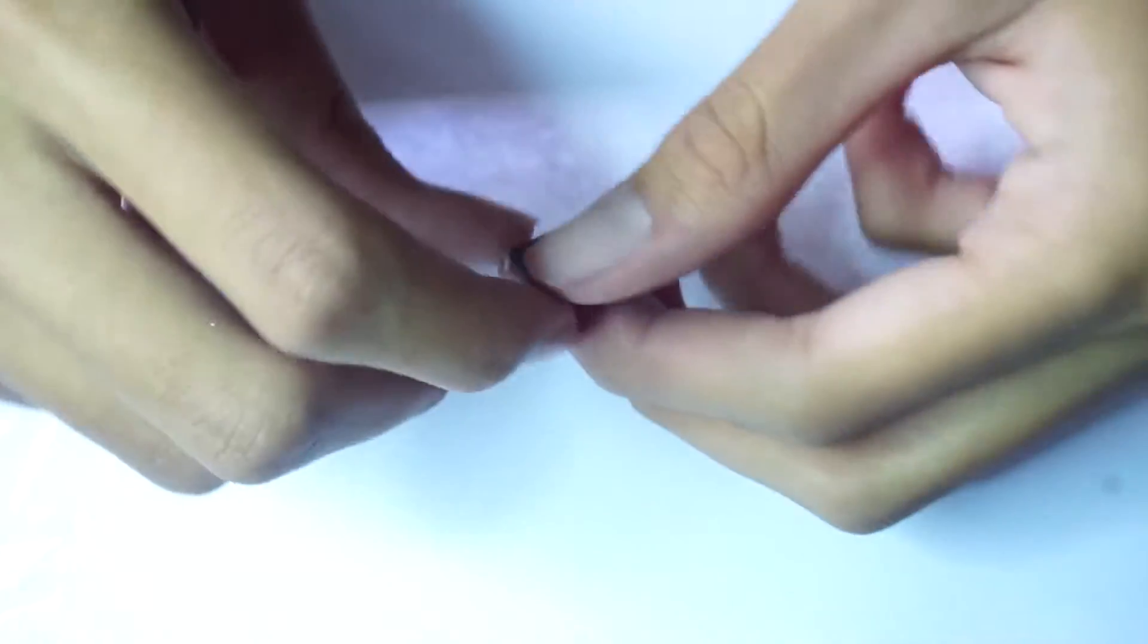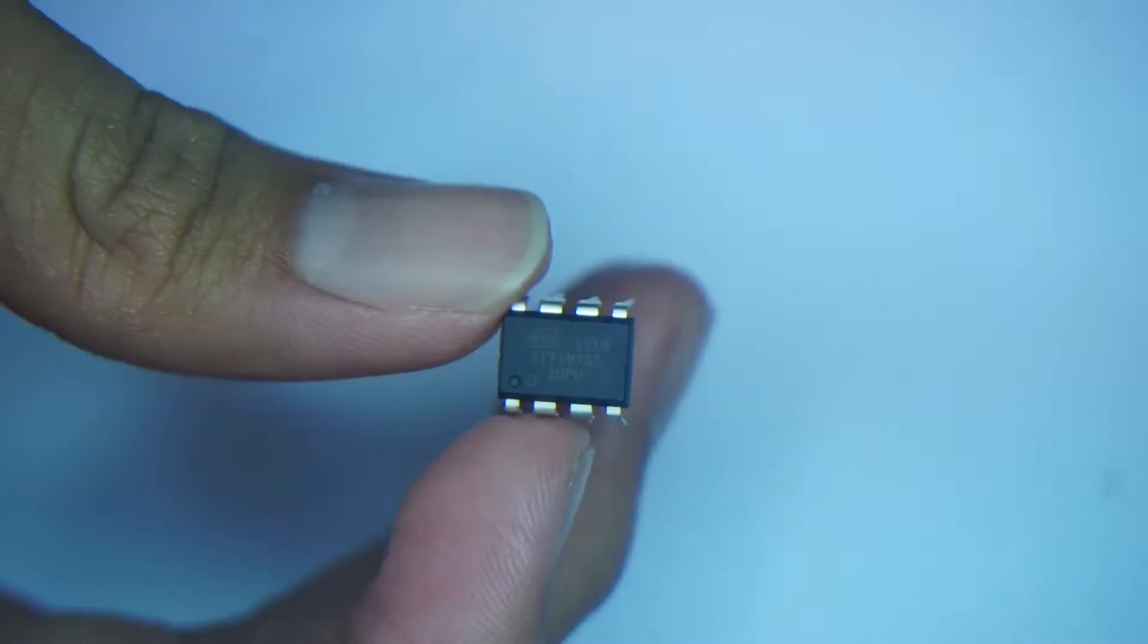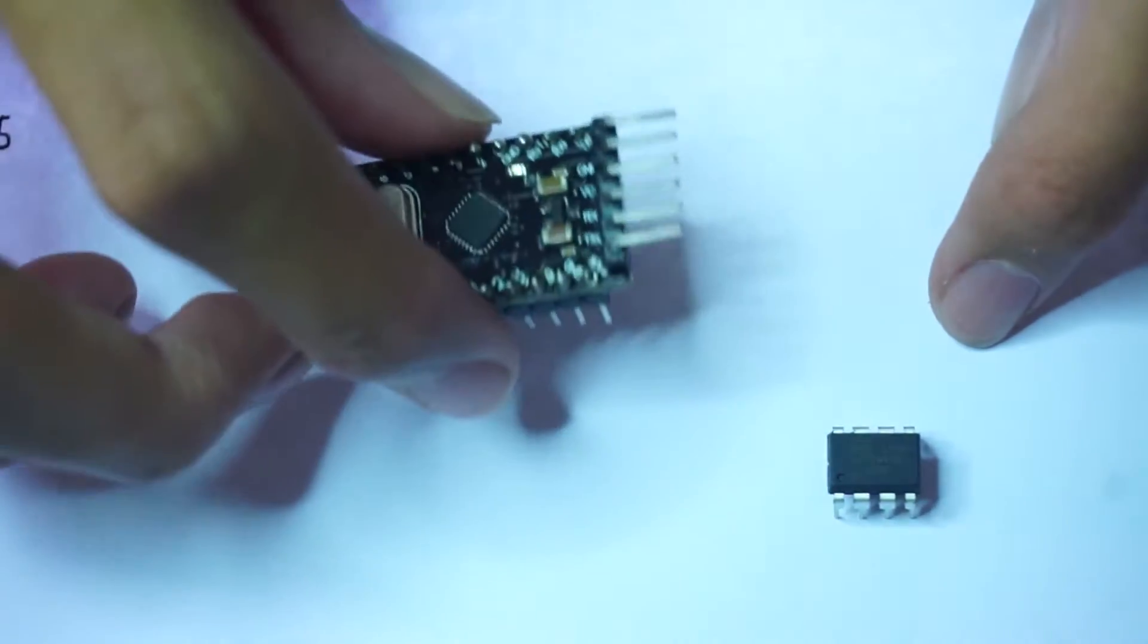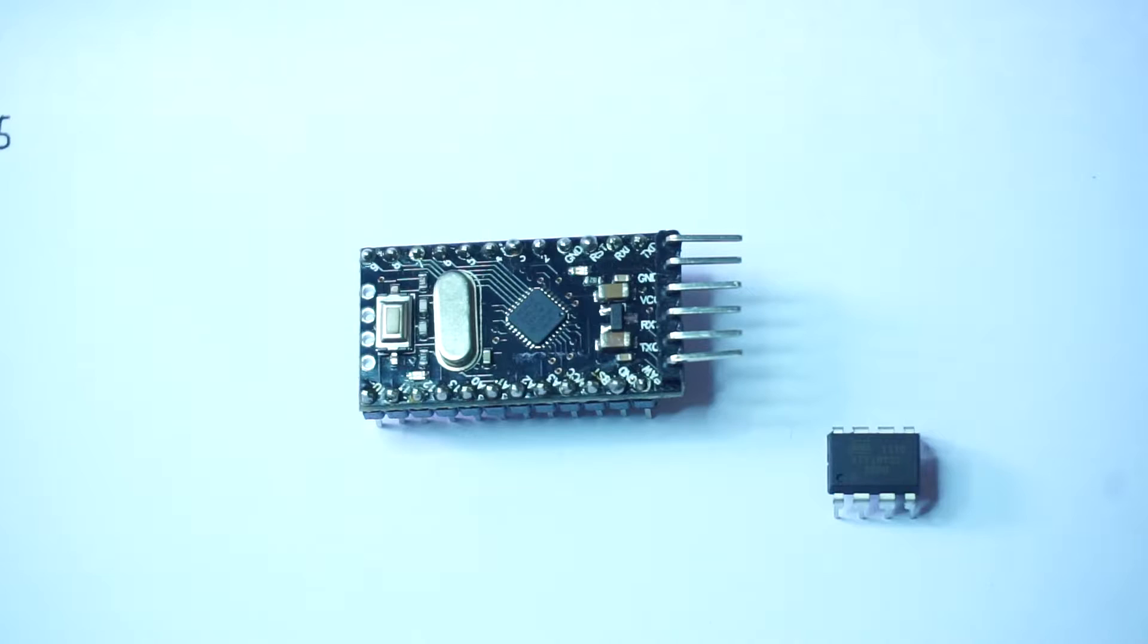And so I decided to buy this famous ATtiny85 thing and in this video I'm gonna show you a step-by-step explanation on how to program this thing with your Arduino and create a programming shield. I'm gonna program the ATtiny with an Arduino Pro Mini 5V and create a shield for it.